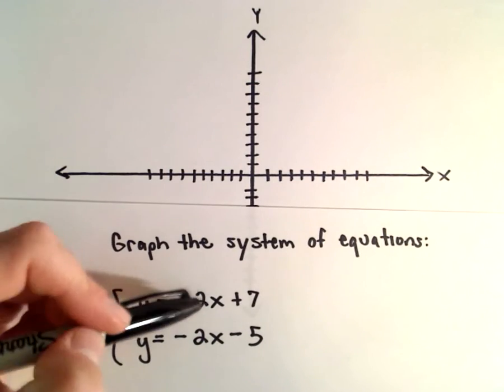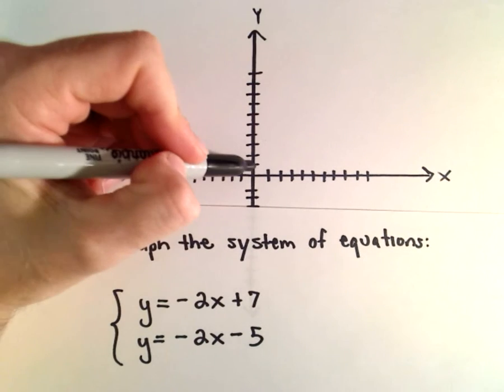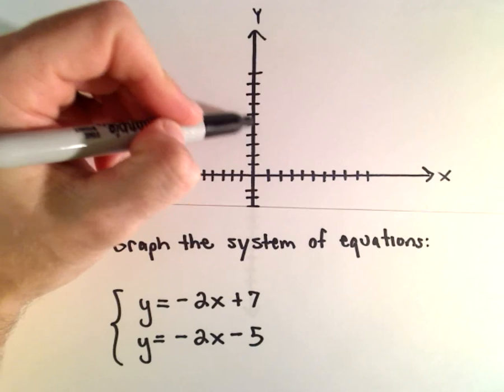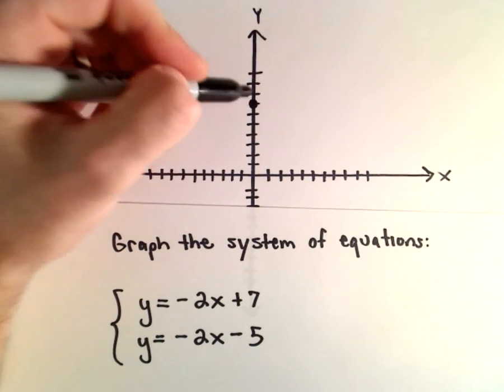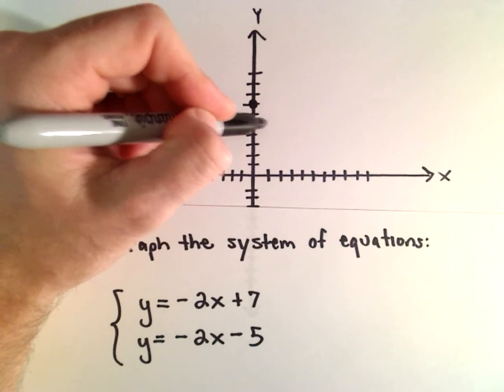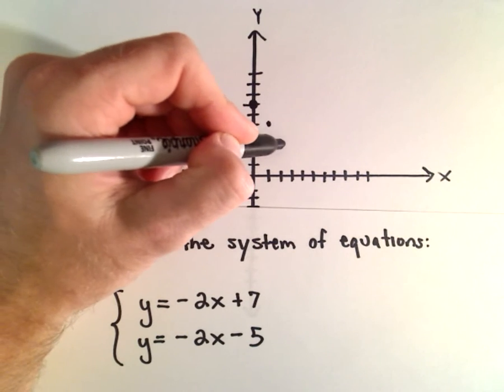I'll graph negative 2x plus 7 first. 1, 2, 3, 4, 5, 6, 7. There's our y-intercept. Now the slope is negative 2, so down 2 over 1, down 2 over 1.